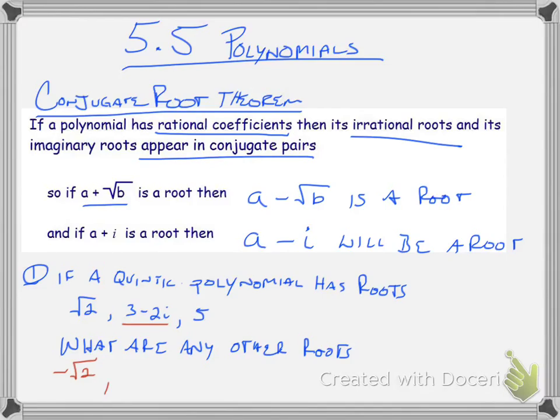And 3 minus 2i is a root. Well, its conjugate will be a root as well, which means 3 plus 2i is a root. Now, because 5 is not irrational, and it's not imaginary, that means I'm not going to use the opposite of that. I don't find another root from that root itself. So those are the only other two roots that I will have, is negative square root of 2 and 3 plus 2i.